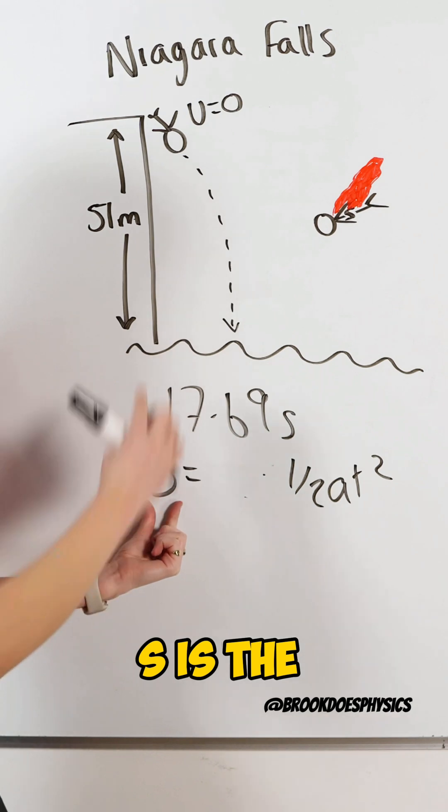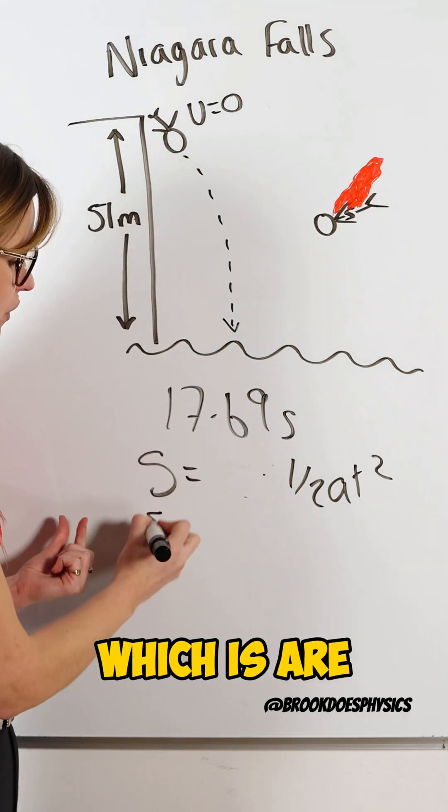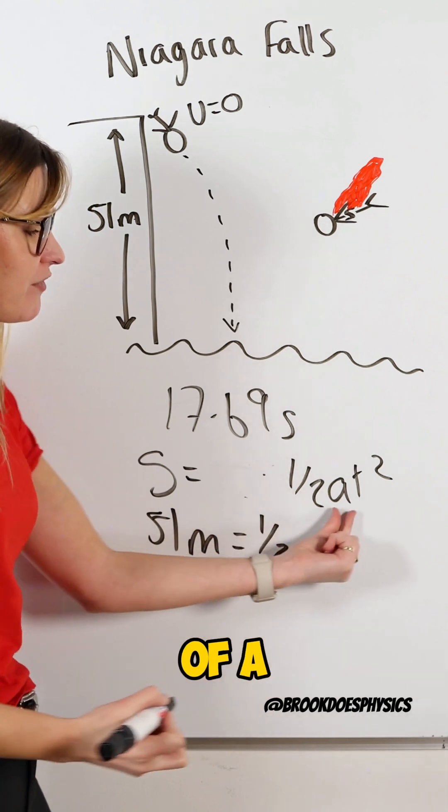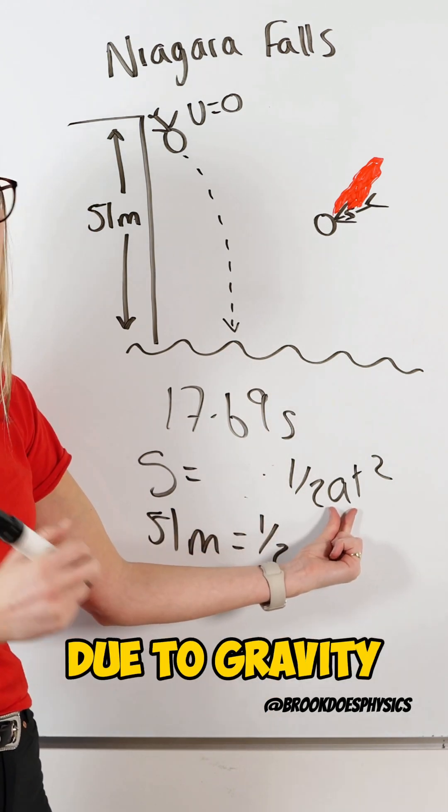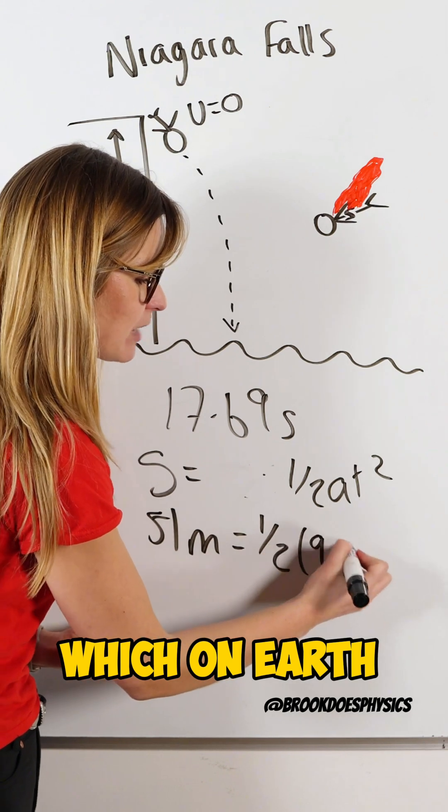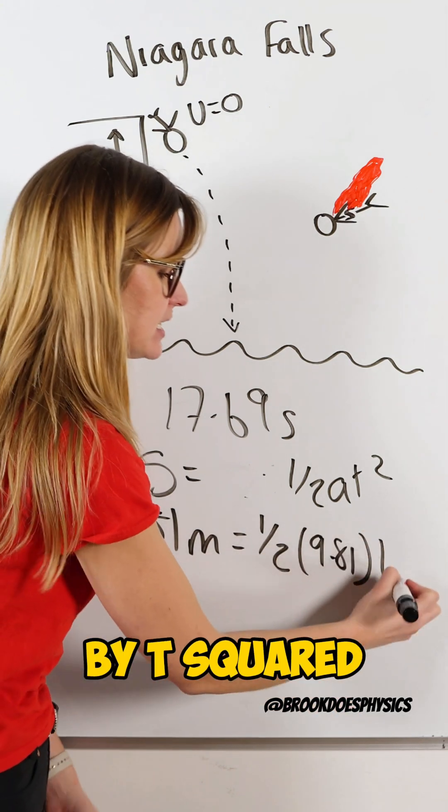S is the height he falls through, which is 51 meters. It's going to equal one half of A. A is our acceleration due to gravity, which on Earth is 9.81, times T squared.